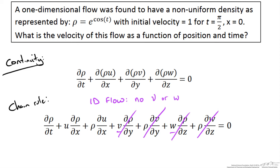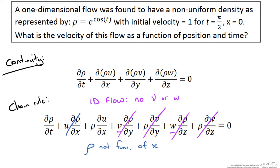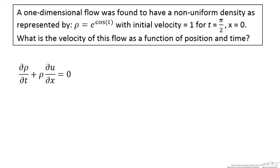We also see that density is not a function of x, because looking at our equation we see there is no x as part of that function. So that differential is going to be equal to zero. That means we are left with two terms: the first term, density with respect to time, and the third term, the velocity in the x direction with respect to x.